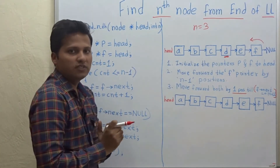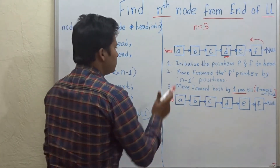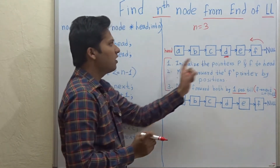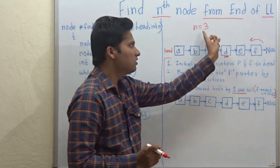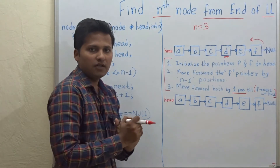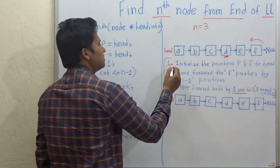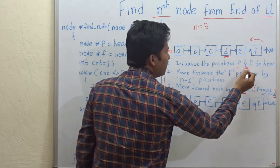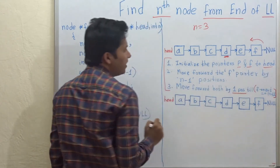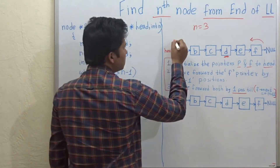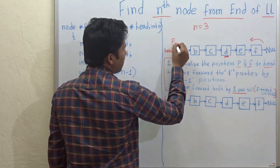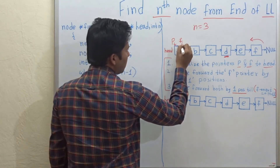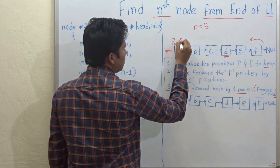So here are the three steps which we have to follow for finding out the nth node from the end of the linked list. The first step says to initialize the pointers p and f to the head pointer. So we will initialize p and f to the head node.